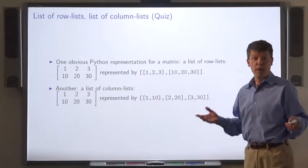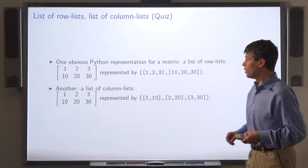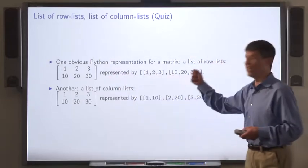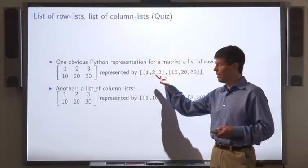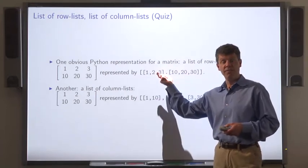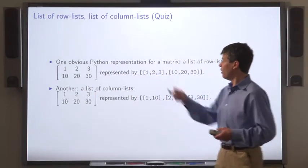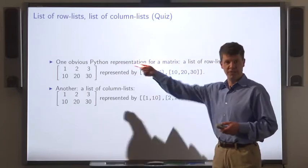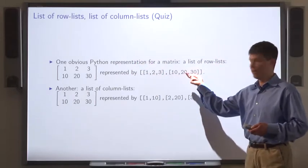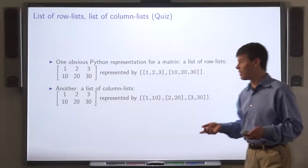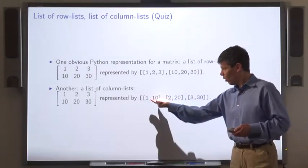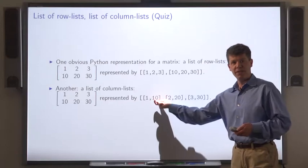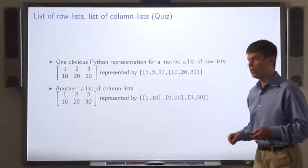We'll sometimes use the more Pythonic notation A brackets ij. Here's an obvious representation for a matrix. We can represent this matrix by a list of lists. Each element of the top level list is a list consisting of the elements of a row. So the first list is 1, 2, 3, the first row. The second list is 10, 20, 30. You could similarly represent this by a list of column lists, where there's one element of the top level list for each of the columns of the matrix.